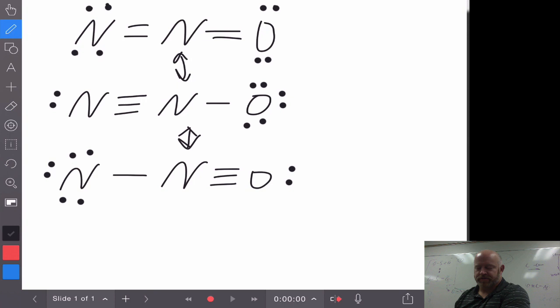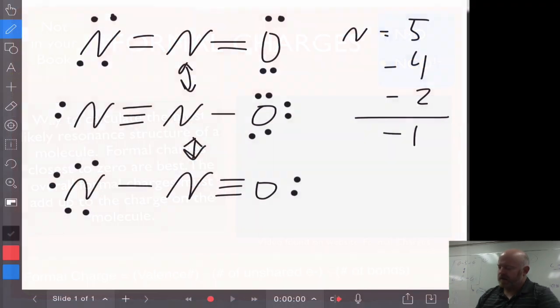So for the nitrogen in the first one, let's take a look at the first nitrogen. It has five valence electrons. And the number of unshared electrons on this particular nitrogen that we're doing, if we take a look at that, it has one, two, three, four unshared. So we're going to subtract away four. And then it has two bonds. So we're going to subtract away two for the number of bonds. And if we do that, we've got 5 minus 4 minus 2 is a negative one. So this nitrogen has a formal charge of negative one.